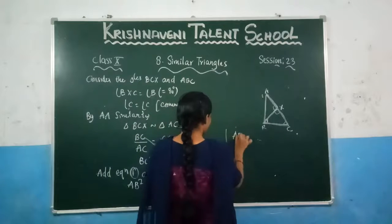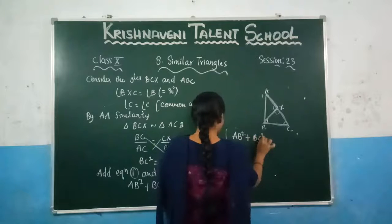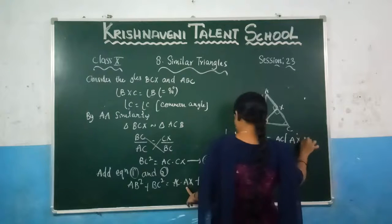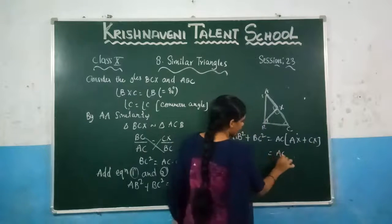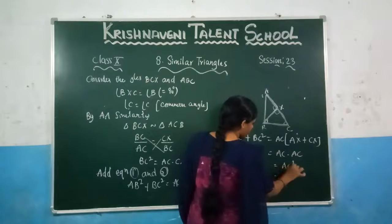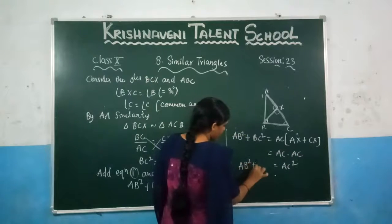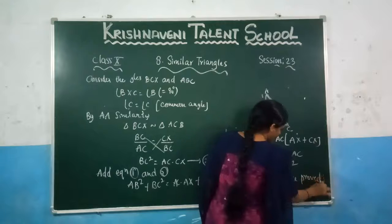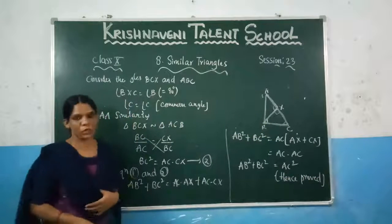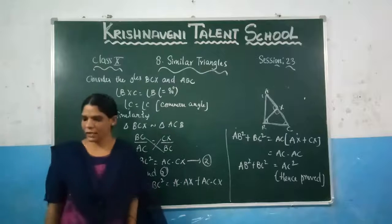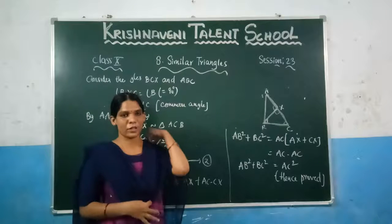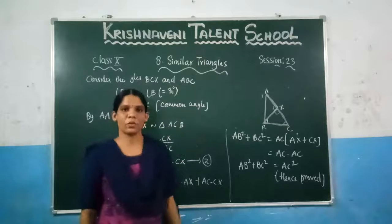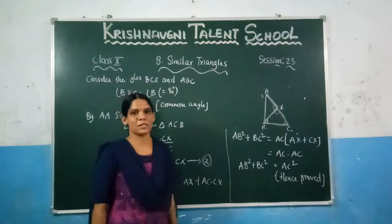Now add equations 1 and 2. AB squared plus BC squared equals AC into AX plus AC into CX. Taking AC common: AC times (AX plus CX). But AX plus CX equals AC, so we get AC squared. Therefore AB squared plus BC squared equals AC squared. This completes the proof of the Pythagorean theorem. In the next section, we are going to prove the converse of this statement.